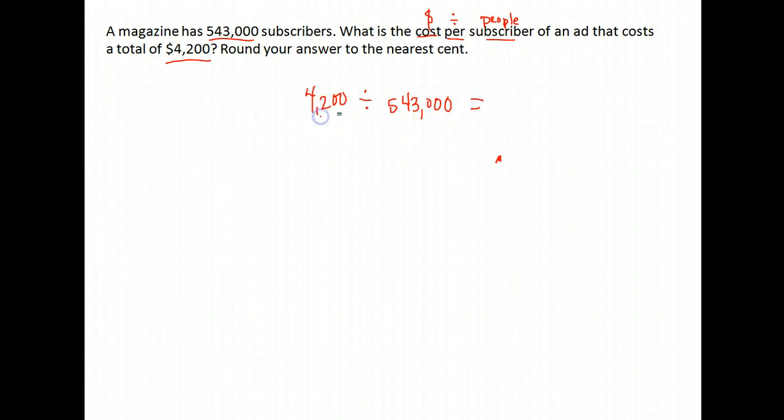Do that carefully. Make sure you put the $4,200 first, then push divide, then $543,000. When we do that, we get .0077348, and it goes on from there.